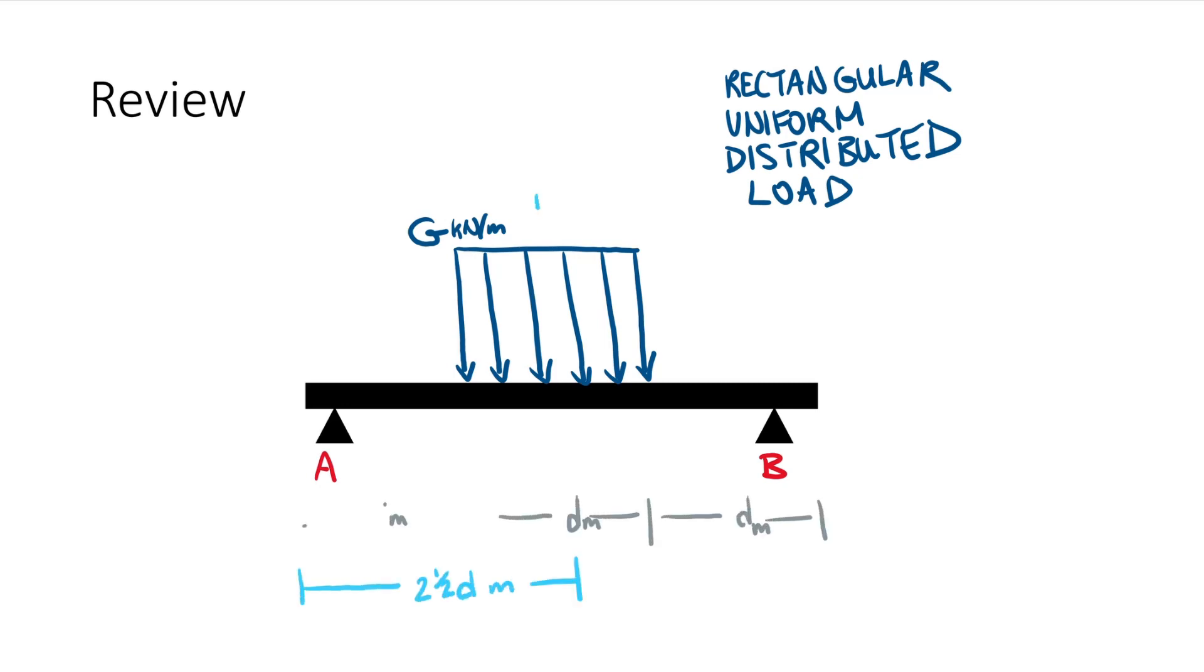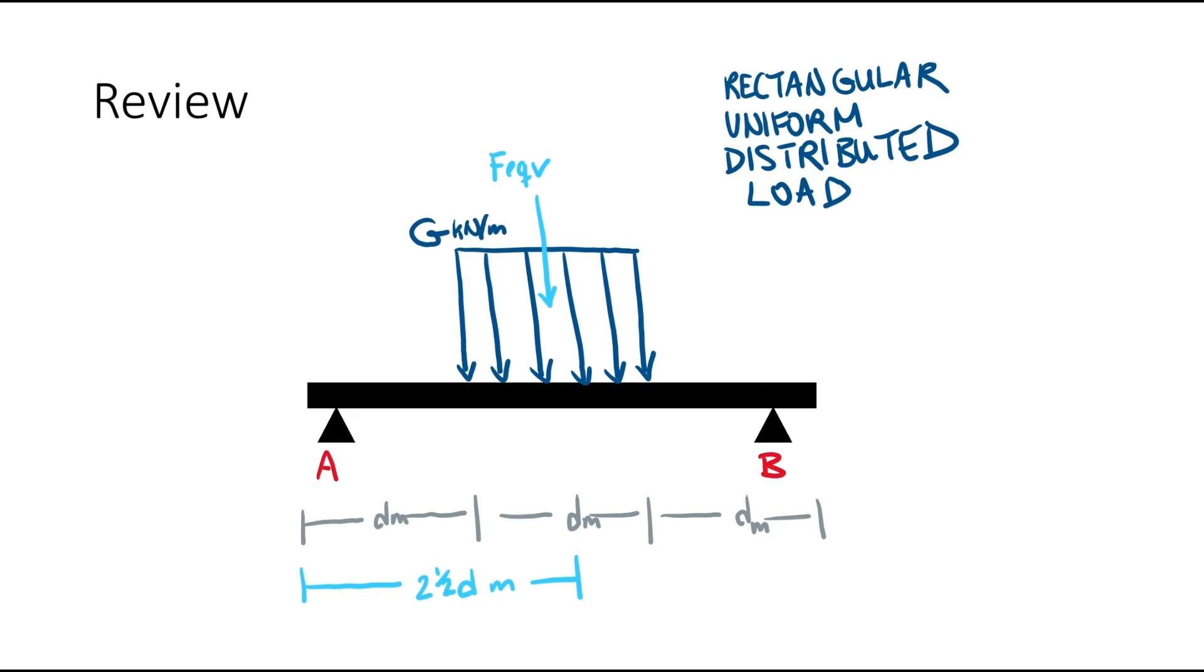If we throw in some measurements here, our force equivalent will act in the middle of our rectangular uniform distributed load, and that is what the blue distance at the bottom indicates as well. Our force equivalent is equal to G times the actual distance that the distributed load experiences, so D, in this case in the units of meters.